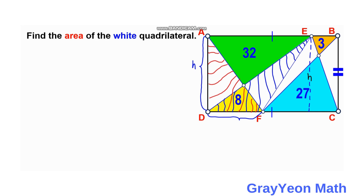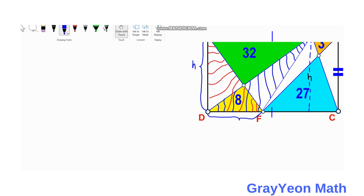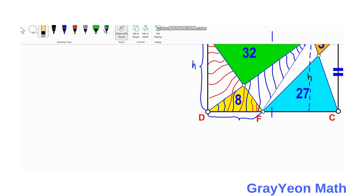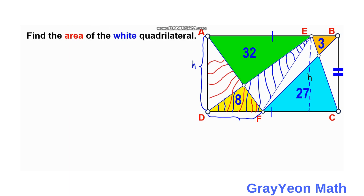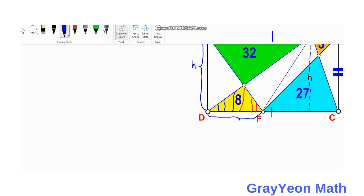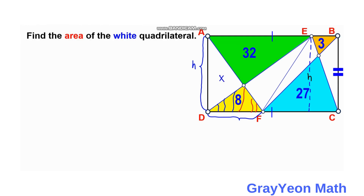Since the two triangles overlap at a common portion — the yellow triangle below — the two white triangles are equal. We can label these two white portions as X, and this one as X also.